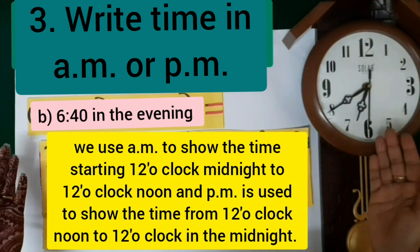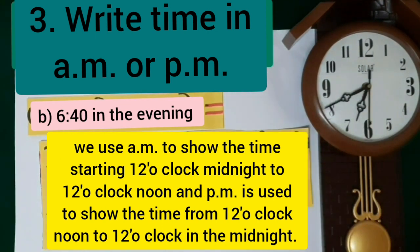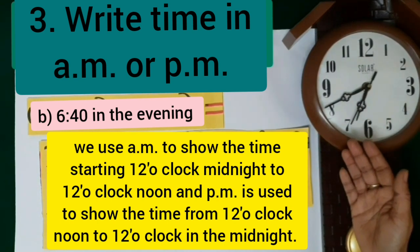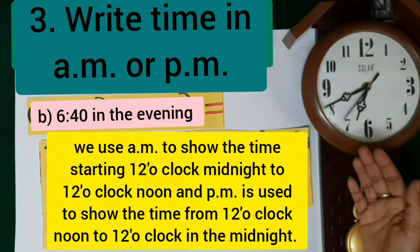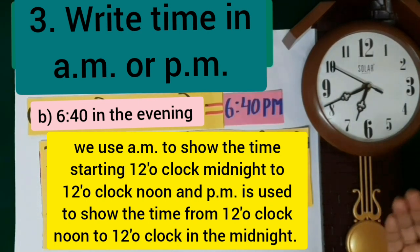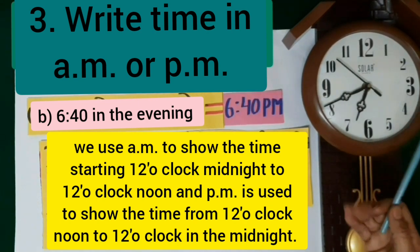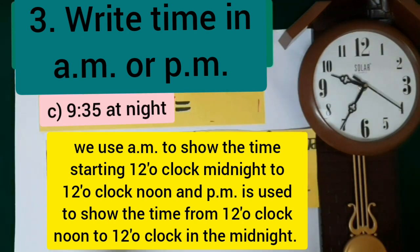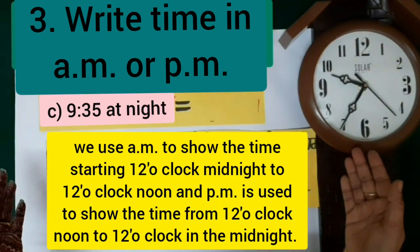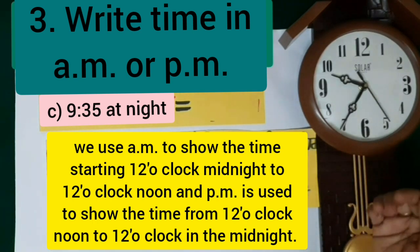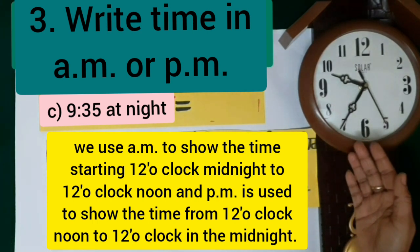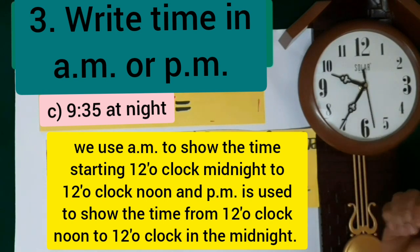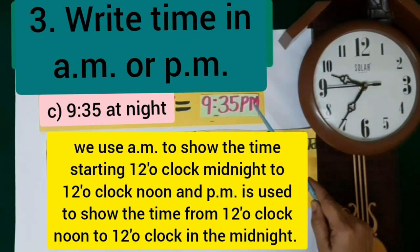Moving to part B, it is 6.40 in the evening. P.m. is used for time from 12 noon to 12 midnight, so 6.40 in the evening is equal to 6.40 p.m. In part C, 9.35 at night is here. P.m. is used for 12 noon to 12 midnight, so 9.35 at night is written as 9.35 p.m.